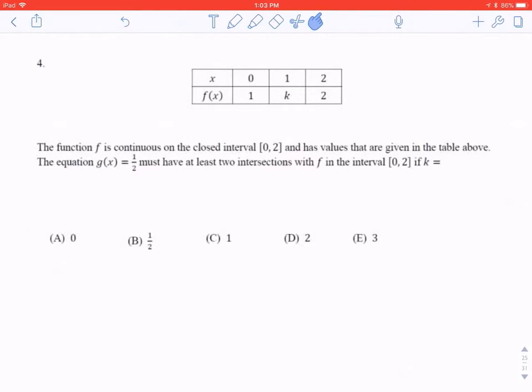Number 4, the function is continuous on the closed interval. So this is the intermediate value theorem. That's what I'm thinking when I hear this. And has values that are given in the table above. The equation g of x is 1 half must have at least two intersections on this interval.